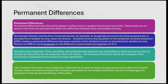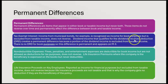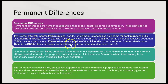Now for permanent differences. Permanent differences are items that appear in either book or taxable income, but never both — they do not reverse over time. Tax-exempt interest is a popular example: income from municipal bonds is recognized as income for book purposes but excluded from taxable income, and it does not reverse. Dividend income qualifying for the dividends received deduction is another example — a portion is excluded from taxable income but there's no dividends received deduction for book purposes. These permanent differences appear on the M-3 reconciliation along with temporary differences.